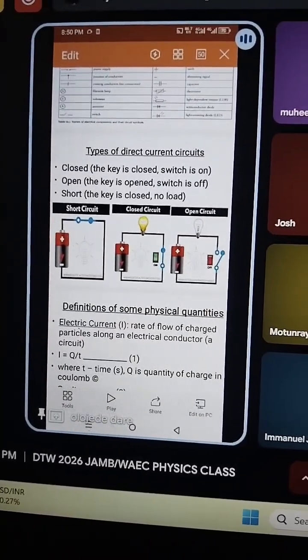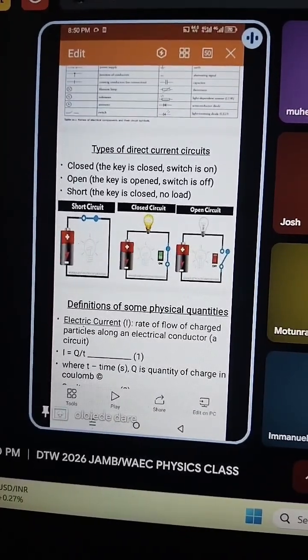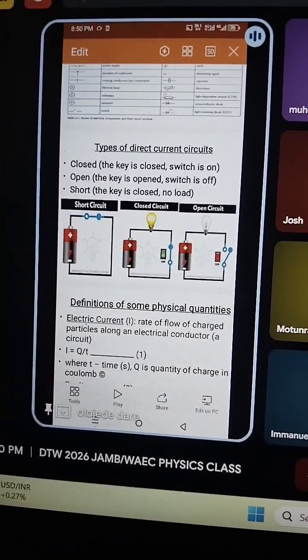The second type is a closed circuit. In a closed circuit, the key is closed. So the switch is on and you see the bulb coming on.